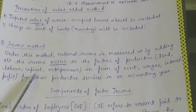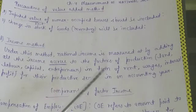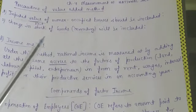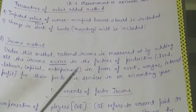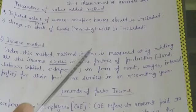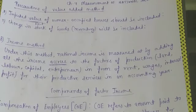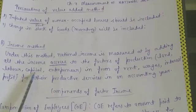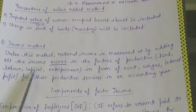Capital means all those man-made goods which are used in further production. Examples of capital goods include machinery, tools and equipment, buildings, all means of transport and communication, and raw materials, among others. So capital refers to man-made productive goods used in further production.